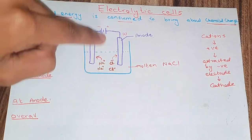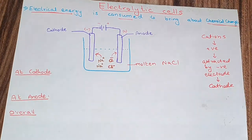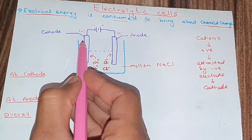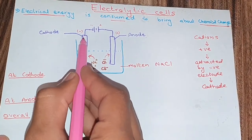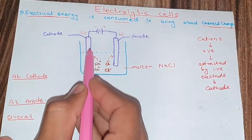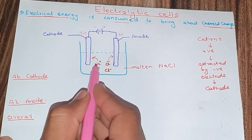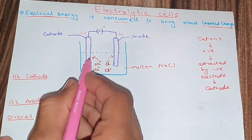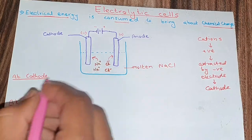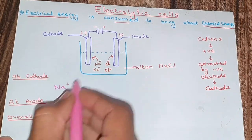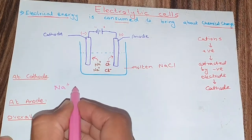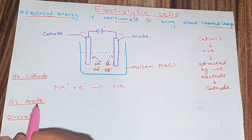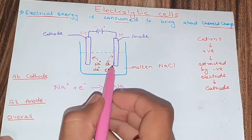At the cathode, the battery supplies electrons through the wire to the electrode. The sodium ions (Na⁺) are attracted to and accept these electrons, depositing as sodium metal. The reaction at the cathode is: Na⁺ + e⁻ → Na.